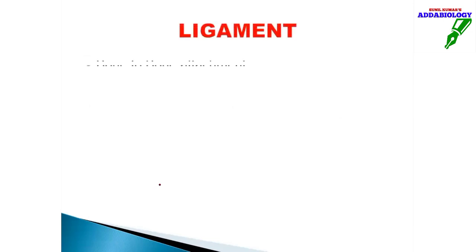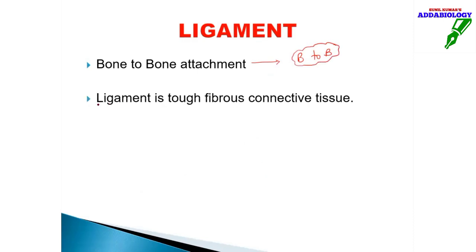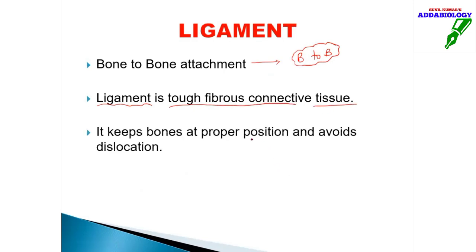A ligament provides bone-to-bone (B2B) attachment. Ligament is tough fibrous connective tissue. What it does is keep bones at their proper position — this is very important. Bones are held in position only because of ligaments, and ligaments also prevent dislocation.